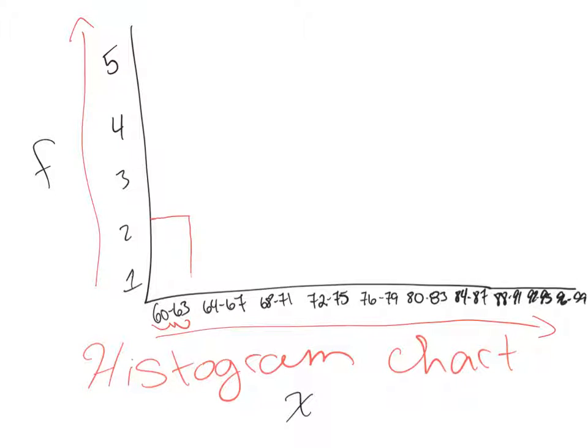For our first one we had 60 to 63. We had two people that scored that. Now this is continuous data, because in theory, somebody could have had a 60.5 or a 63.43. So with the continuous data, we do a histogram, where it looks like a bar chart, but all the lines are smooshed together. And that kind of implies this continuous data. We didn't have anybody that had 64 to 67, so we're going to leave that at zero. And then the next one we had was 68 to 71, and we had two people that had that also.